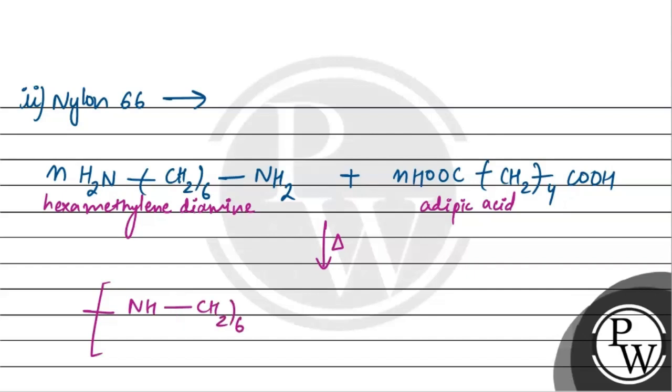NH-C(=O)-(CH2)4-C(=O)-NH-(CH2)6, and then the bracket closes with subscript n. This is the repeating unit of Nylon-66.